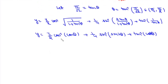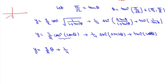Since θ lies in the principal value range of cos⁻¹, cos⁻¹(cos θ) = θ directly. For sin⁻¹(sin 2θ): when θ ∈ (π/4, π/2), 2θ ∈ (π/2, π). In this interval, sin⁻¹(sin x) = π − x, so sin⁻¹(sin 2θ) = π − 2θ. For tan⁻¹(cot θ), we write cot θ = tan(π/2 − θ), and since π/2 − θ is in the principal value range of tan⁻¹, tan⁻¹(cot θ) = π/2 − θ.